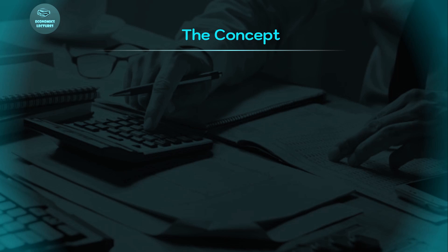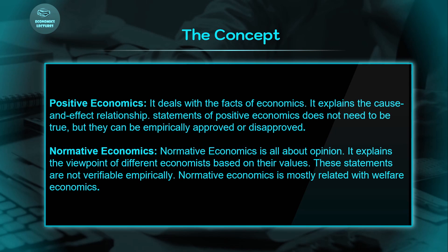The concept here is that we have two types of economics: one is positive economics and the other is normative economics. Positive economics deals with the facts of economics, whereas normative economics is about opinion. Positive economics tells us whether a statement is true or false, whereas normative economics is all about the personal opinion of an individual.